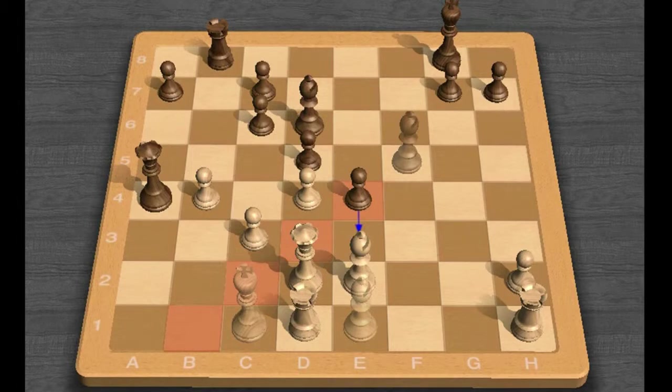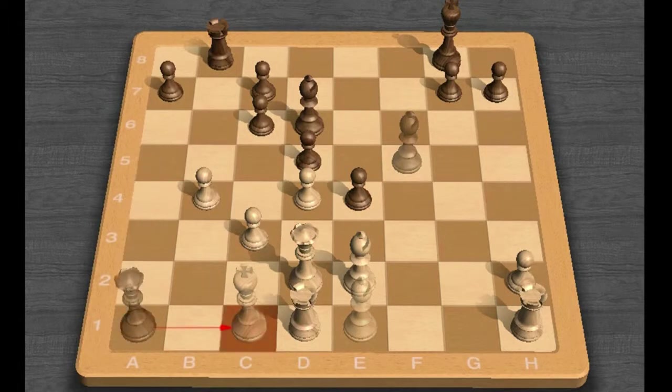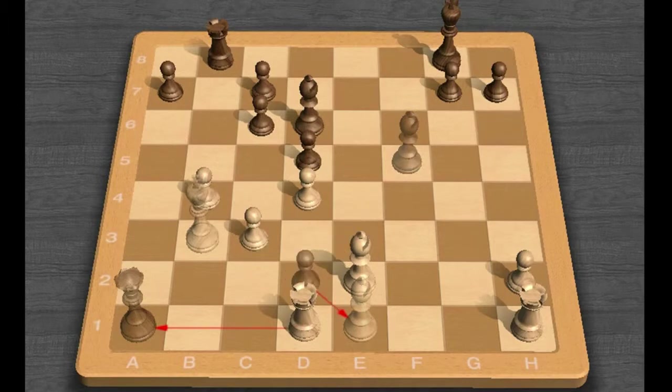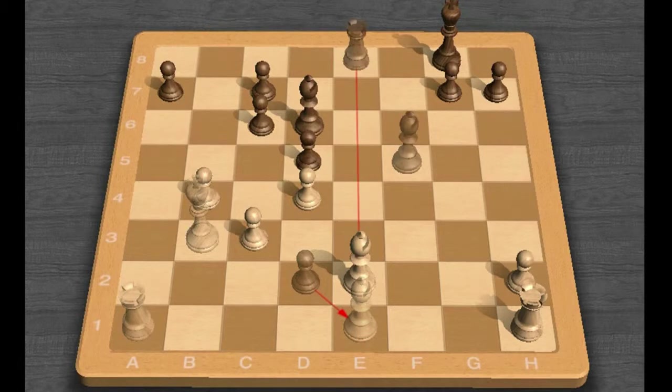Black can then win some material back with Queen A1 check, King C2, E3 check, King B3, E captures D2, Rook captures A1, Rook E8, but a win is far from certain.